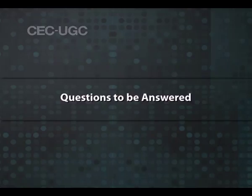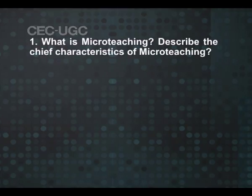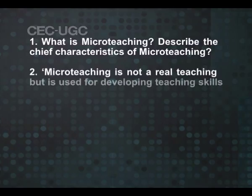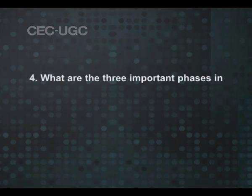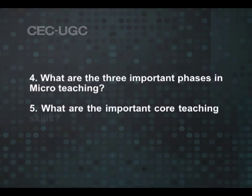Summary: The module encompasses teaching skills for classroom instruction — mainly micro-teaching, its rationale for use, definition, micro-teaching cycle, and several micro-teaching skills with their components. It discusses how to conduct skill-based practice and how it can be linked to normal classroom teaching. The module gives a clear understanding that micro-teaching should be conducted as a training technique for improving teaching skills in all forms of teacher education courses. Review questions: What is micro-teaching? Describe its chief characteristics. Discuss: 'Micro-teaching is not real teaching but is used for developing teaching skills.' What are the limitations of micro-teaching? What are the three important phases? What are the important core skills?